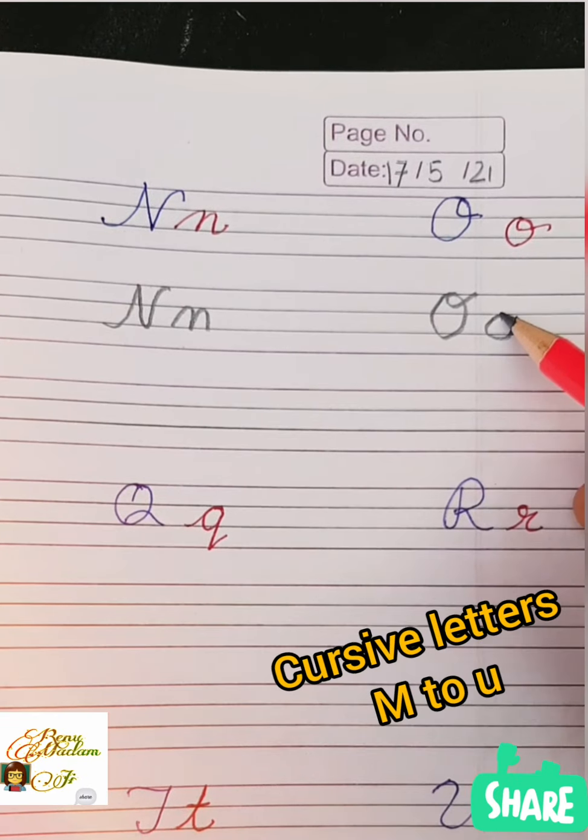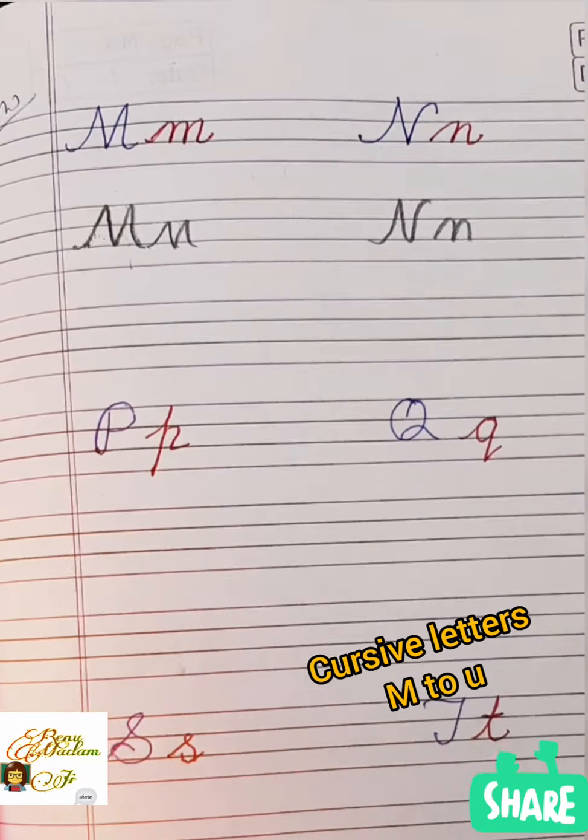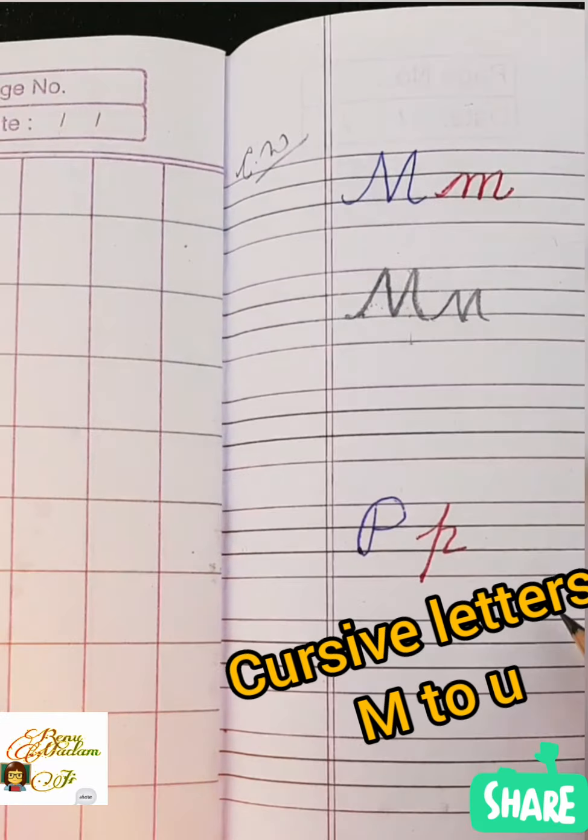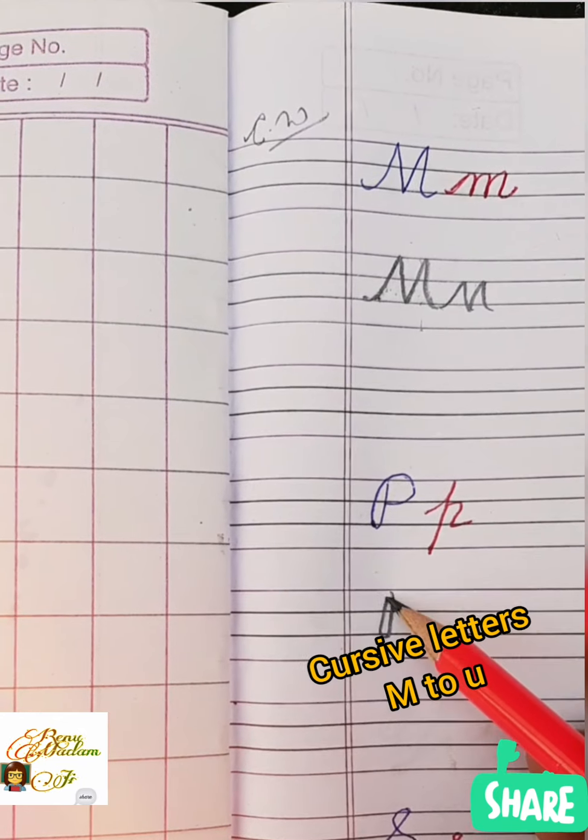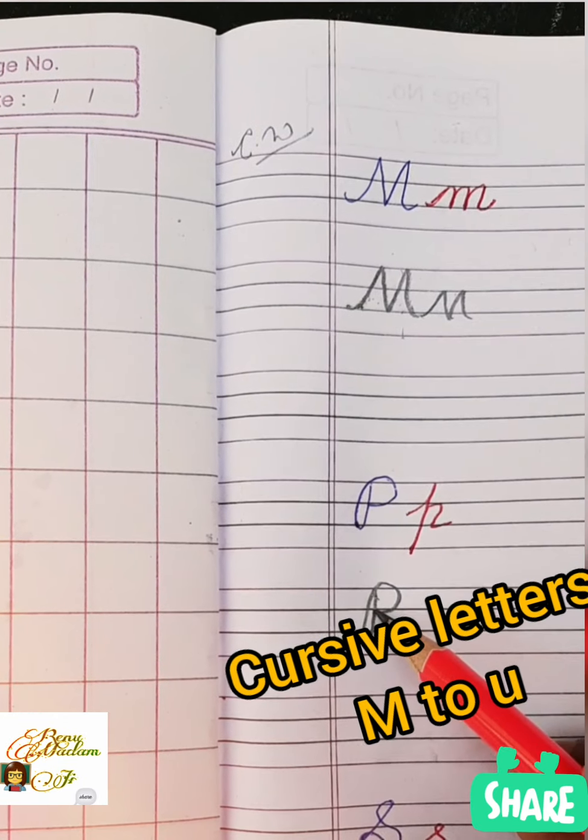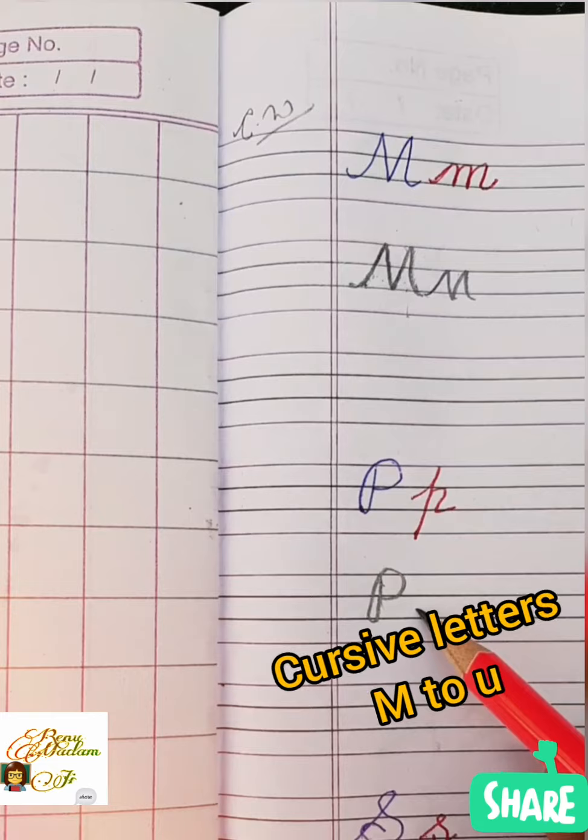How to write P? Draw a standing line up, then small half circle. This is our cursive P.